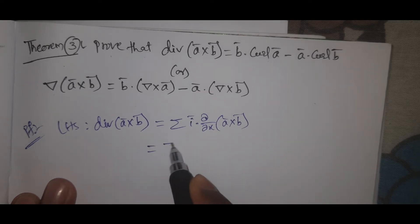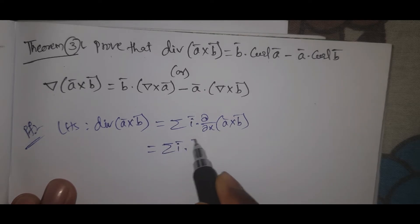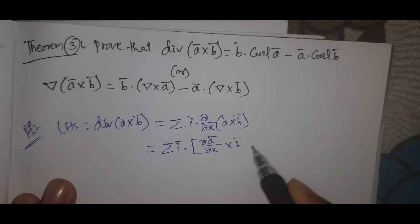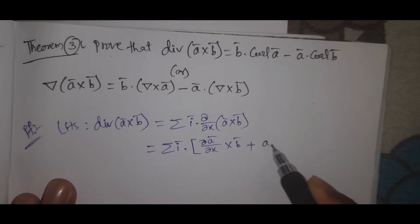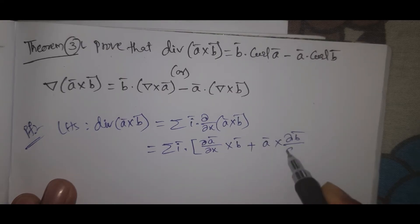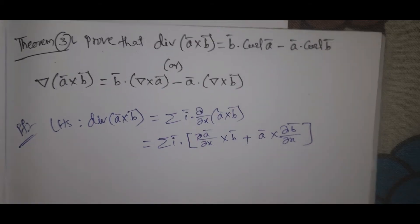Now see here, summation i bar dot. We'll apply the u into v method: dou a bar by dou x cross b bar plus a bar cross dou b bar by dou x.